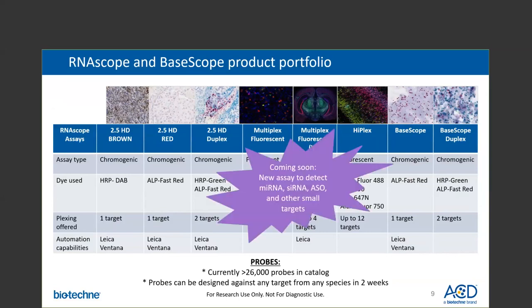Next, expanding our product portfolio — not only do we have assays to detect mRNAs, long non-coding RNAs, short target splice variants, and point mutations, but we'll be releasing a new assay in the summer to detect small RNAs, including antisense oligos, microRNAs, and small interfering RNAs.